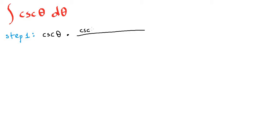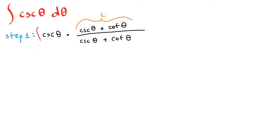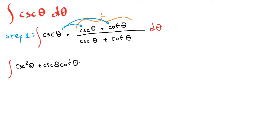Since this fraction is equal to 1 — anything divided by itself is 1 — we don't change anything in cosecant theta. So our new integral will be this, and we're going to distribute cosecant theta into this numerator. Our integral will turn into cosecant squared theta plus cosecant theta times cotangent theta, all over cosecant theta plus cotangent theta, d theta.